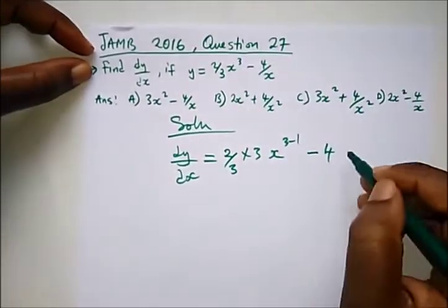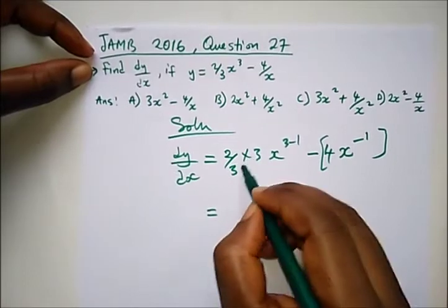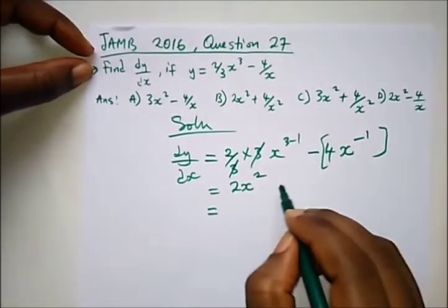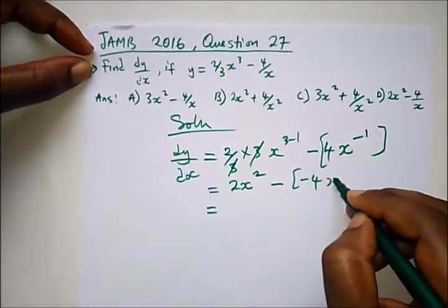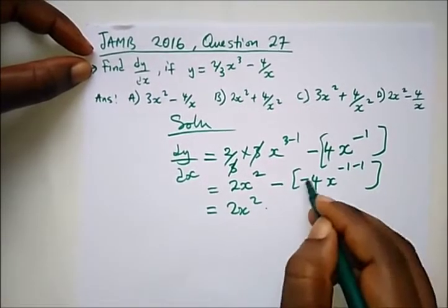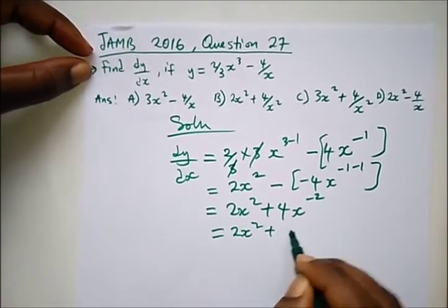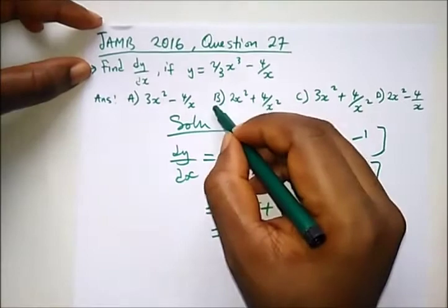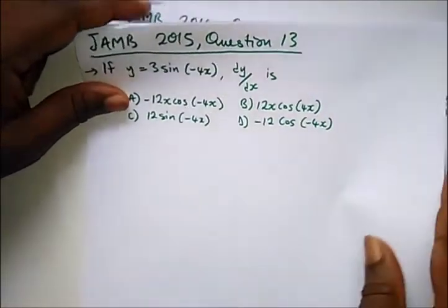dy/dx will be: (2/3) times 3 gives x^(3−1), and bringing the 4x term up using a negative exponent gives minus 4x^(−1). After cancelling, we are left with 2x². Then minus 4 times x^(−1−1) gives minus 4x^(−2), which opens to plus 4/x². So the answer is 2x² + 4/x², which is option B.